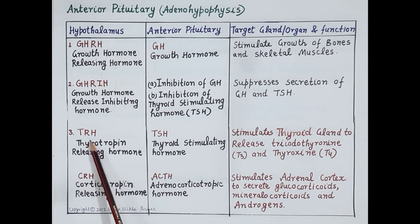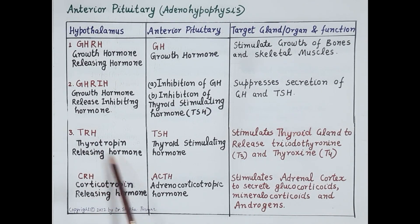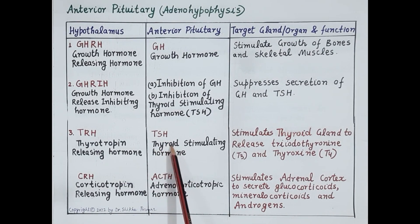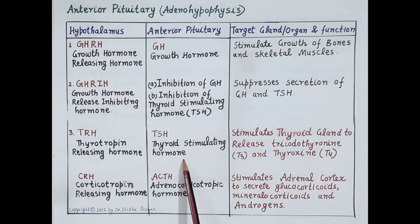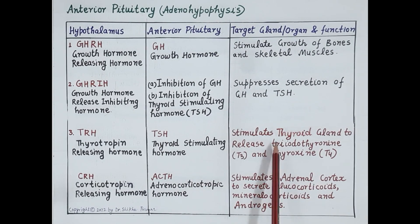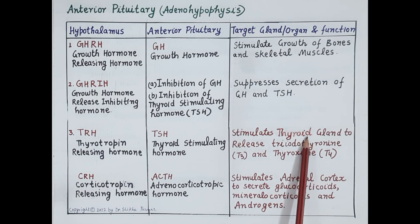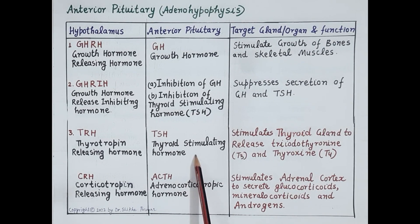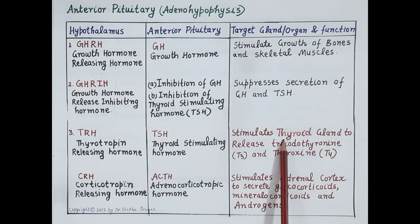Next is thyrotropin releasing hormone (TRH), which stimulates anterior pituitary to release TSH (thyroid stimulating hormone). TSH is produced by anterior pituitary and is a tropic hormone — it stimulates the thyroid gland, another endocrine gland, to release hormones into the blood. Pituitary gland is termed as the master gland because it produces tropic hormones like TSH, which further stimulates other endocrine glands such as the thyroid gland.